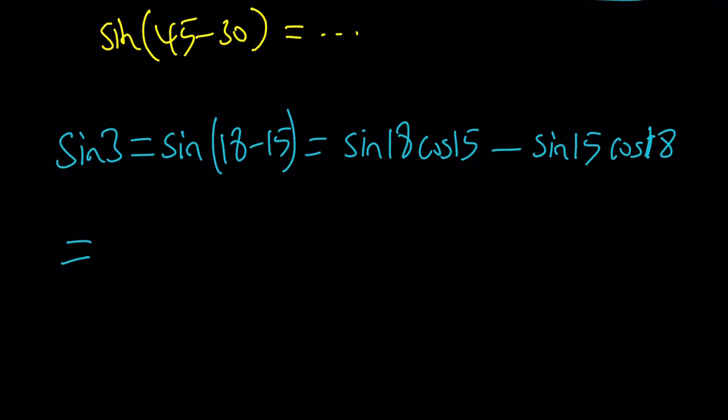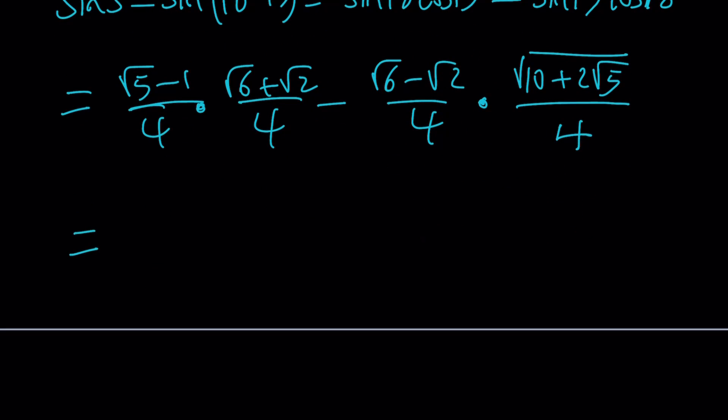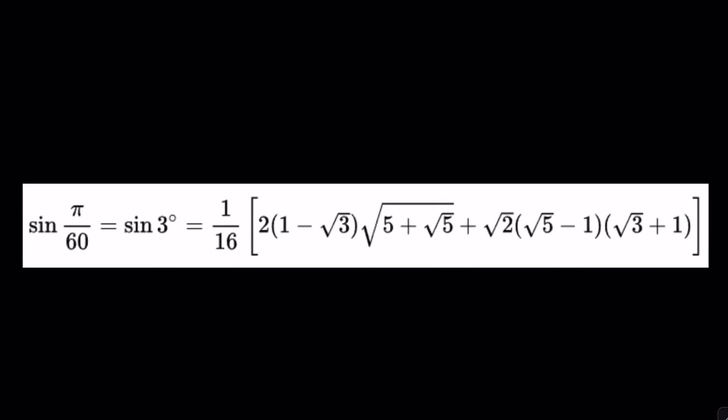Root 5 minus 1 over 4 times root 6 plus root 2 over 4, and then minus sine 15, which is root 6 minus root 2 over 4, times square root of 10 plus 2 root 5 over 4. And when you do the math, you're going to get 16 at the bottom, which is a common denominator. Let's go ahead and quickly look at the result from Wikipedia. This brings us to the end of the video.